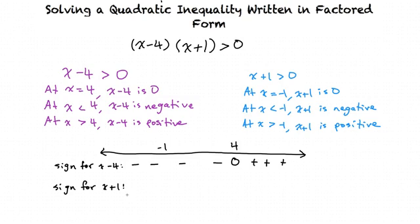For x plus 1: x plus 1 is 0 at x equals negative 1, and it is negative at x less than negative 1, so everything before negative 1 is negative. For x greater than negative 1, x plus 1 is positive.